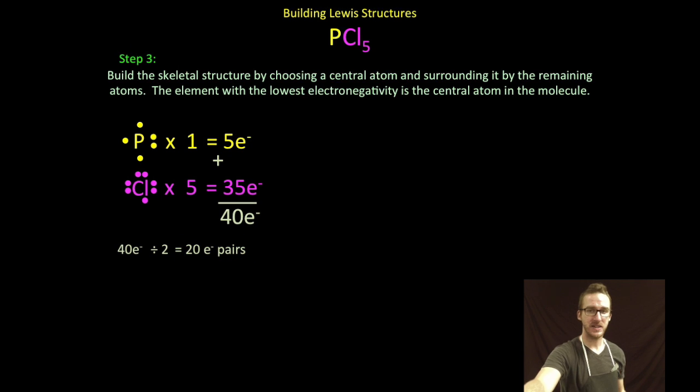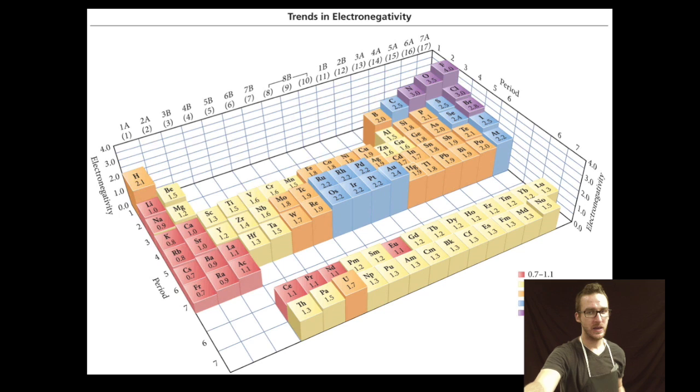We're going to build the skeleton of our Lewis structure by choosing the less electronegative element to go in the center. A little trickier this time because we have phosphorus and chlorine. No hydrogen just to easily rule out. So, as I look at my periodic table, I find phosphorus, I find chlorine. Recognize that phosphorus is the less electronegative of the two.